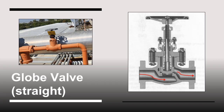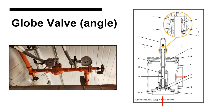Straight globe valves are common in refrigeration systems and are largely used for controlling flow by allowing or stopping it. Typically, the flow direction through a globe valve is against the plug. Globe valves should not be used to throttle the flow of fluid; instead, they are either fully open or fully closed and require multiple turns to operate. Angled globe valves are just as common and are used for the same purpose.